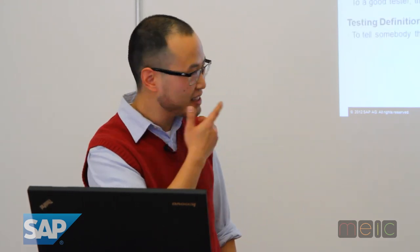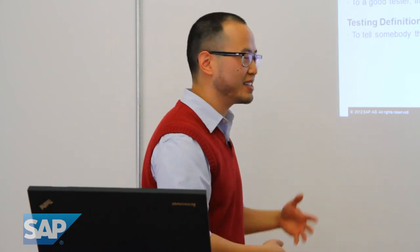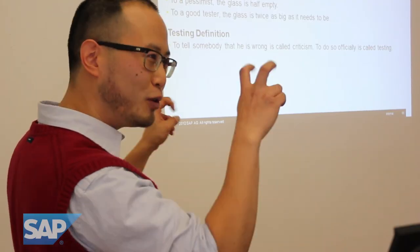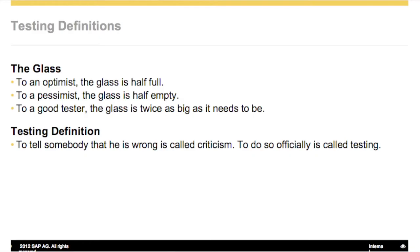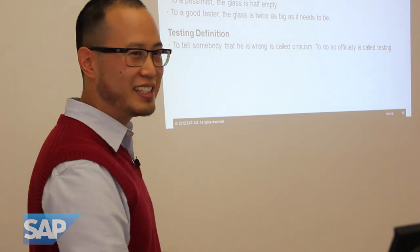There's one more. This guy had a whole list of definitions of the world view of testers. The glass - to the optimist, the glass is half full. To the pessimist, the glass is half empty. The good tester says, 'the glass is twice as big as it needs to be.'